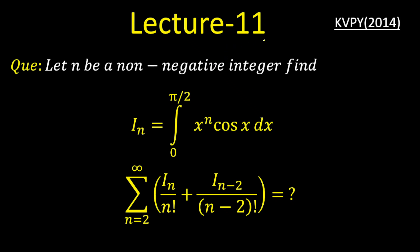Hello everyone, welcome to lecture number 11 of the integration series. In today's lecture, I am going to take a previous KVPY question which was asked in the year 2014. The question is: let small n be a non-negative integer, then find the value of I(n)/n! plus I(n-2)/(n-2)!, where n varies from 2 to infinity, and I(n) is defined as the integral from 0 to π/2 of x^n cos(x) dx.